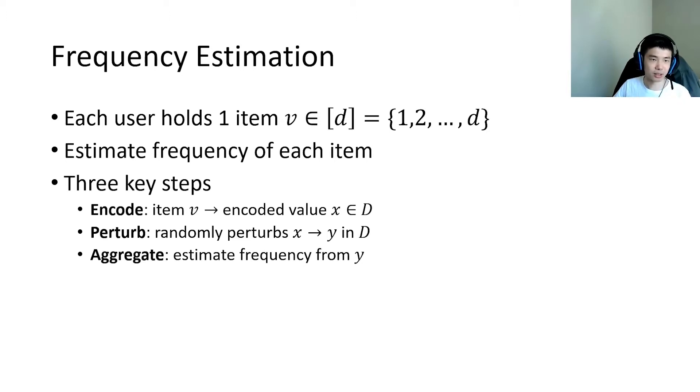Second, the users randomly perturb the encoded value to another one. Third, the server aggregates the perturbed encoded values to estimate the item frequency.